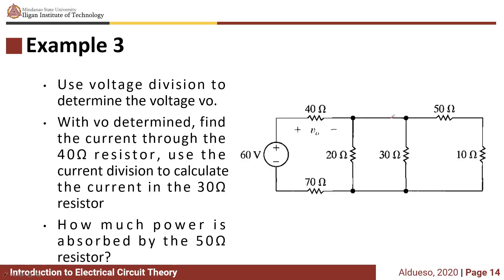Now it's your turn to solve this problem. Use voltage division to determine the voltage VO. With VO determined, find the current through the 40 ohm resistor. And use current division to calculate the current in the 30 ohm resistor. Lastly, how much power is absorbed by the 50 ohm resistor when the current in the 30 ohm resistor is equal to 24?